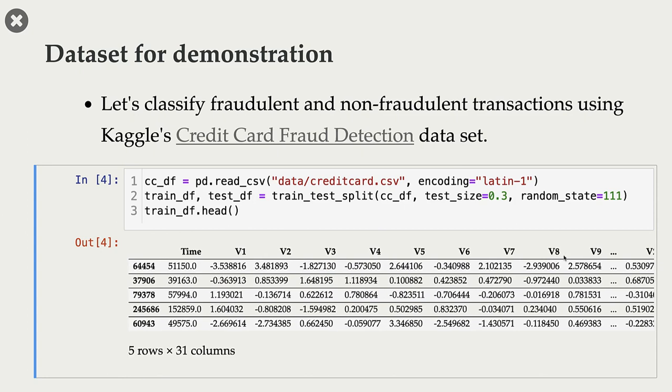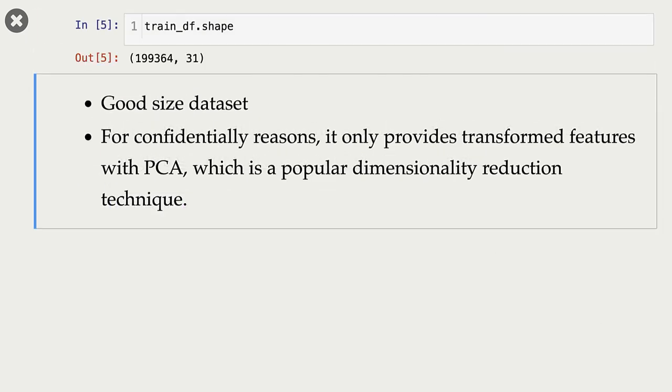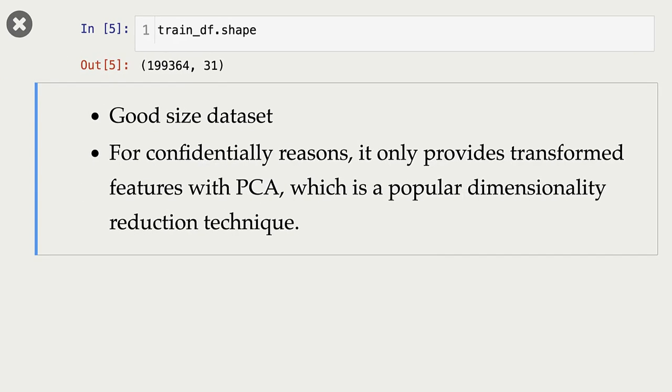Now we don't know about PCA yet, and we will be learning about it in DSCI 563. Now let's look at how many examples we have. We have around 200,000 total examples.